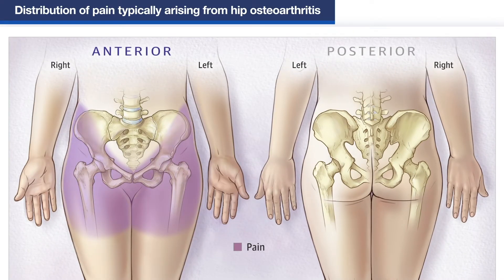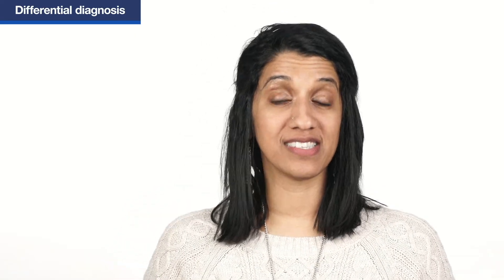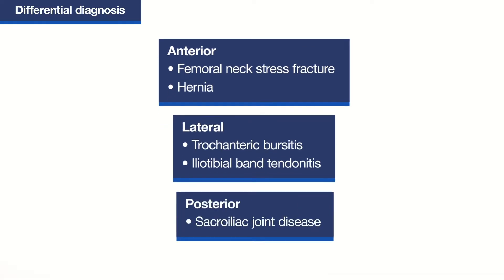Patients may point to the lateral or posterior portion of the hip. In that situation, you need to be concerned about osteoarthritis as well, and do the appropriate examination to rule it out. Some differentials to consider for anterior, lateral, and posterior hip pain are listed here.